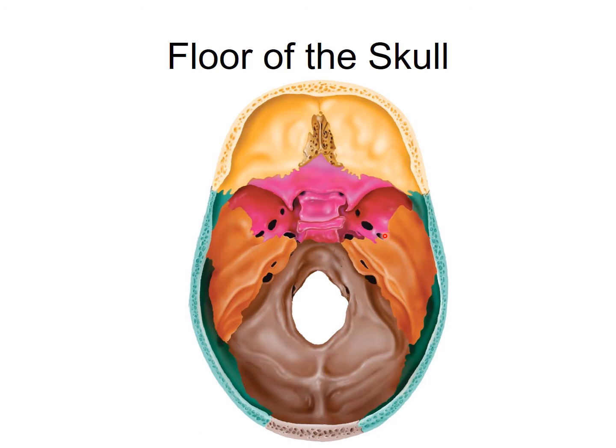Posterior and lateral to the ethmoid bone, we have the temporal bones here, and then here we have the occipital bone. Again, we have those foramina — the foramen magnum. Here is the jugular foramen and here is the foramen ovale. You can't really see the carotid canal from this view.